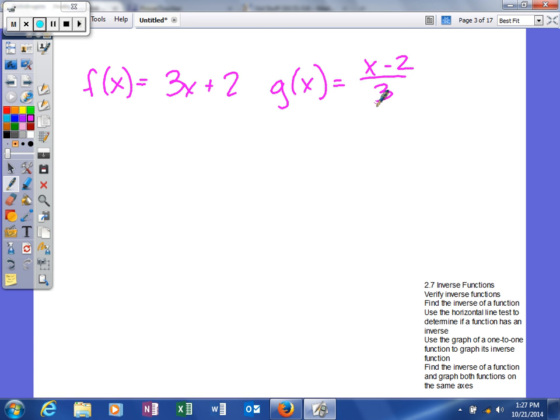To verify inverse functions, we can find a composite of those two functions: f(g(x)) and g(f(x)). To prove two functions are inverses, both of those have to be equal to x.